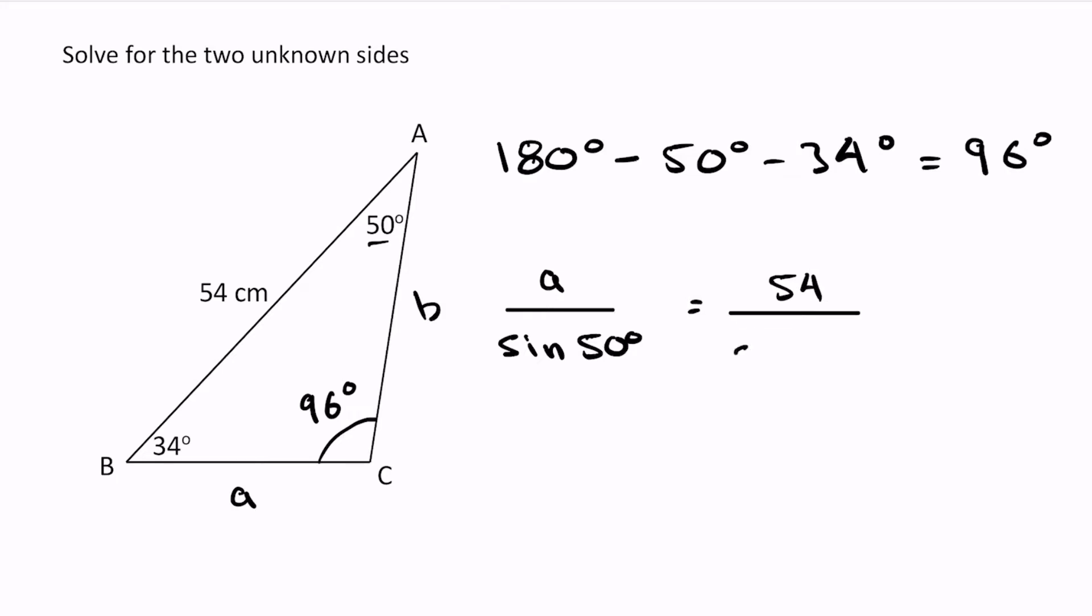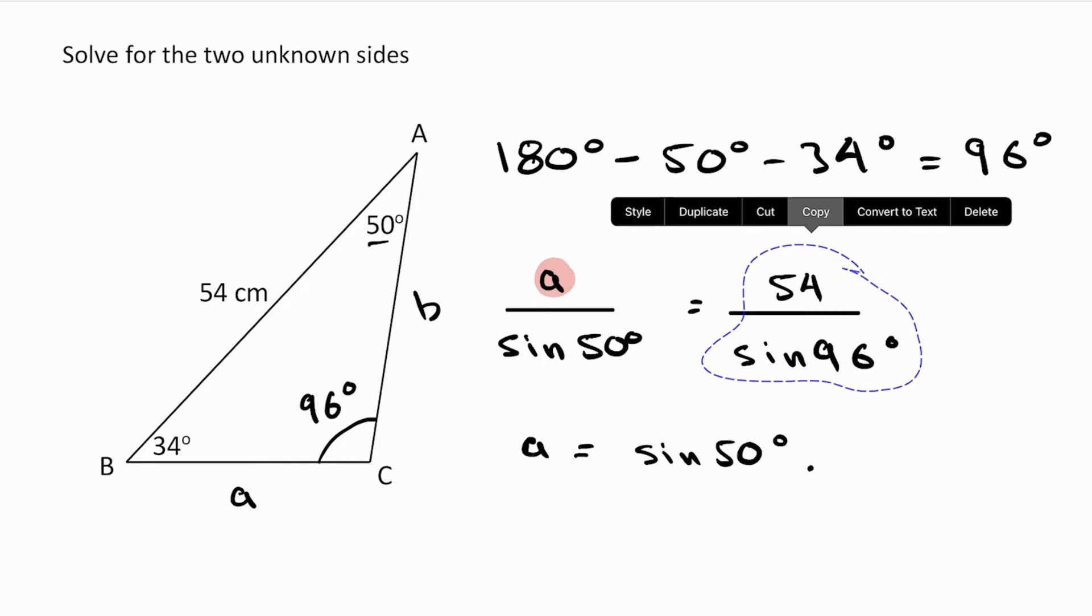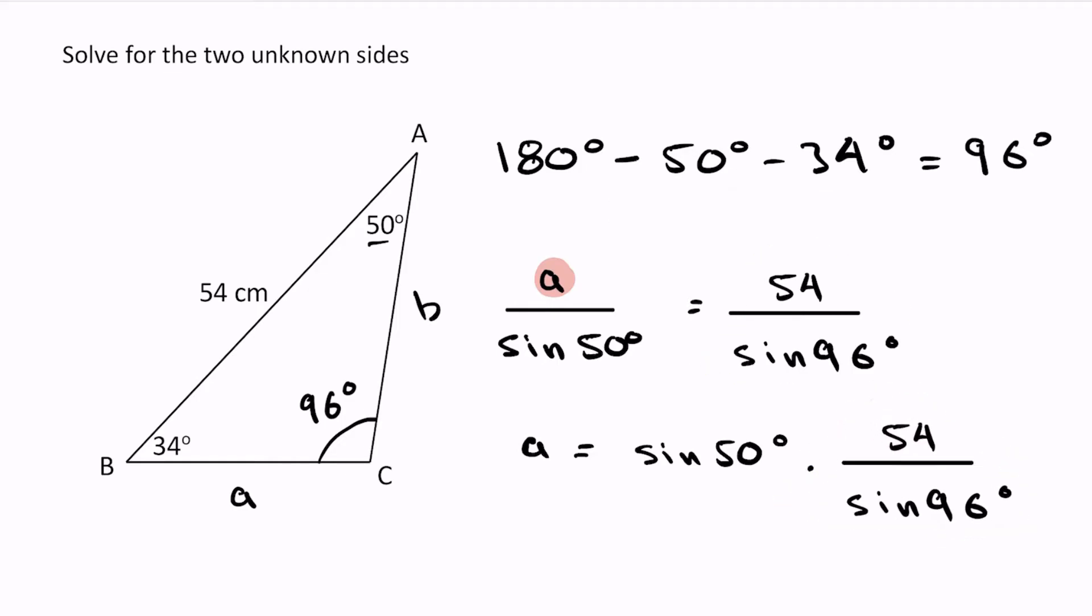At this point, notice how the unknown is here at the top. I'm going to multiply both sides by sine 50, and what I end up with is a equals sine 50, which is some decimal number, times this entire fraction here.